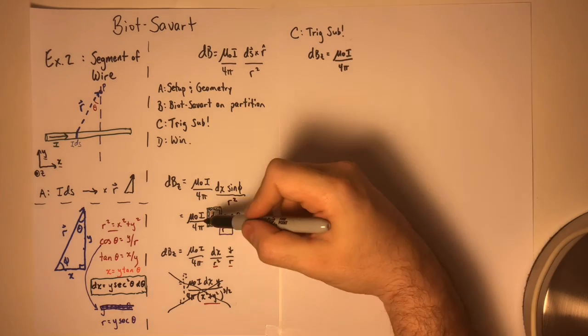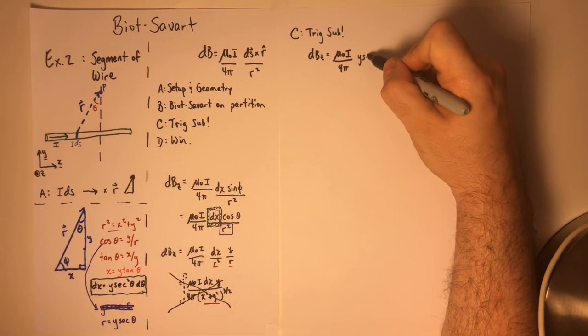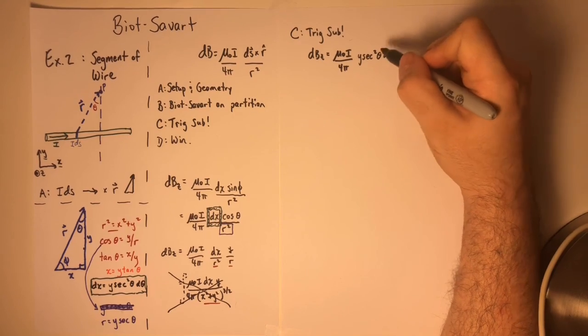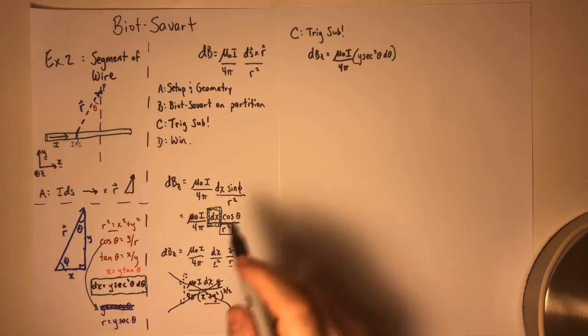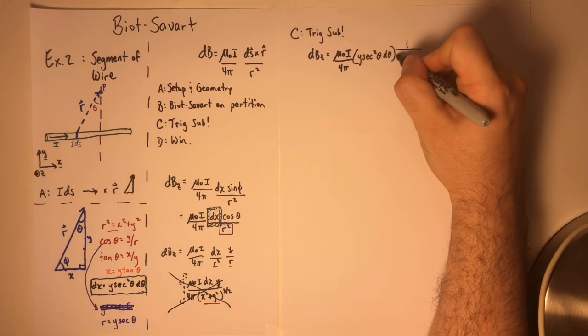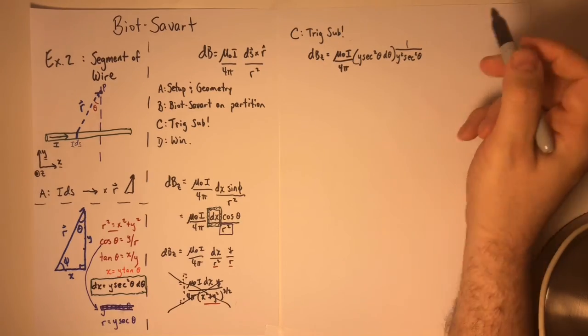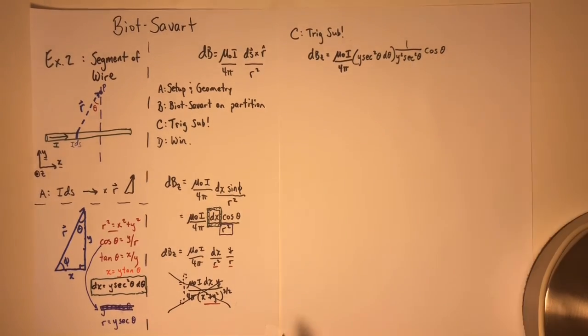So once I rewrite the Biot-Savart law using these substitutions, mu naught I over 4 pi remains. dx now gets replaced with Y sec squared theta d theta. 1 over R squared gets replaced with 1 over Y squared sec squared theta. And cosine theta remains exactly where it was.